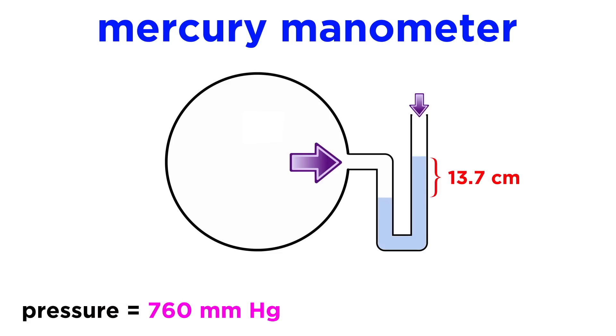We know atmospheric pressure is 760 millimeters of mercury, so we will take the 137 measured here and add it to 760, to get 897 millimeters mercury. From there we could convert into any other unit of pressure if we wished.